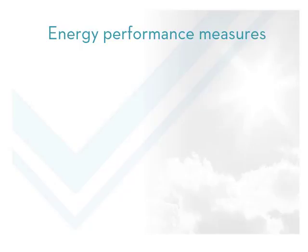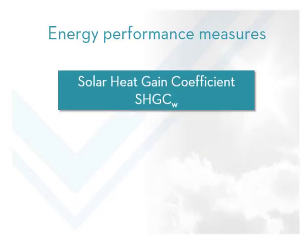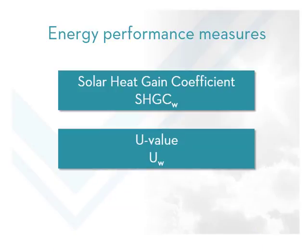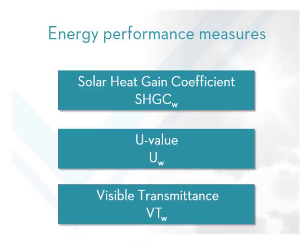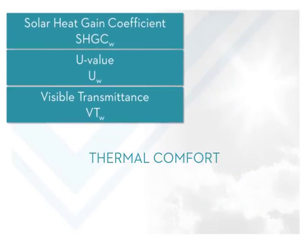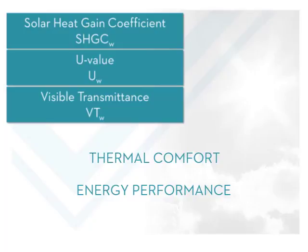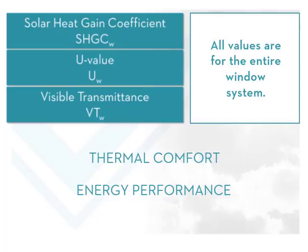So let's look at the three main measures of energy performance for fenestration products. They are solar heat gain coefficient, also referred to as SHGC, U-value, and visible transmittance. These three measures are of great importance when considering the design of a building to ensure both thermal comfort and energy performance. It's important to note that these are all for the whole-of-window system, which is made up of the frame, glass, seals and any spaces.